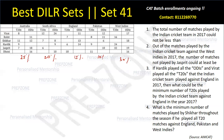Question number one: the total number of matches played by the Indian cricket team in 2017 could not be less than — so we need to find the minimum number of matches. Let the number be x. Against Australia, India must have played 25% which is x/4; against South Africa, x/5; against England, 15% is 3x/20; 10% is x/10; and West Indies is 30% which is 3x/10.